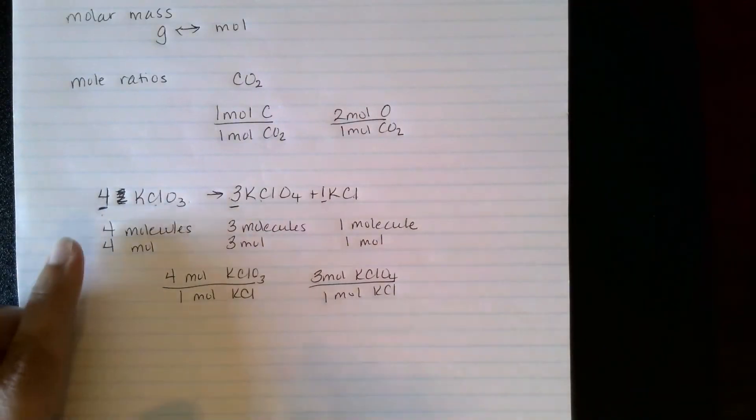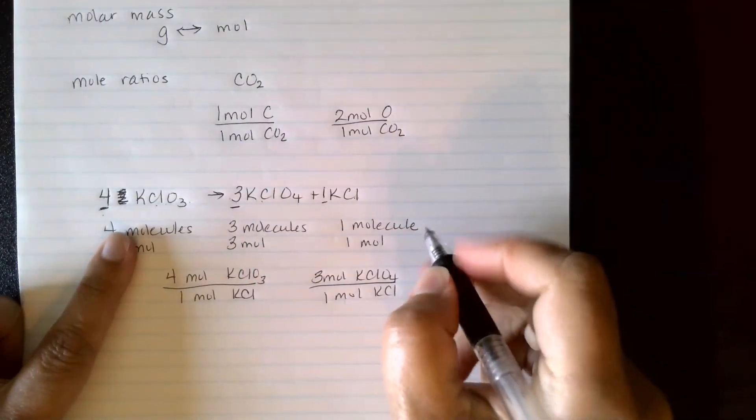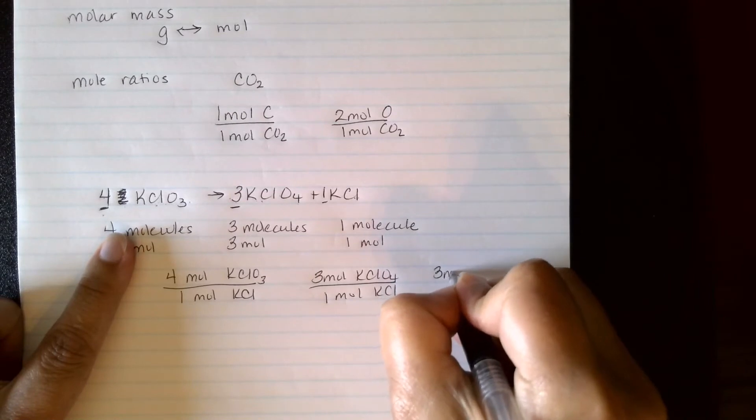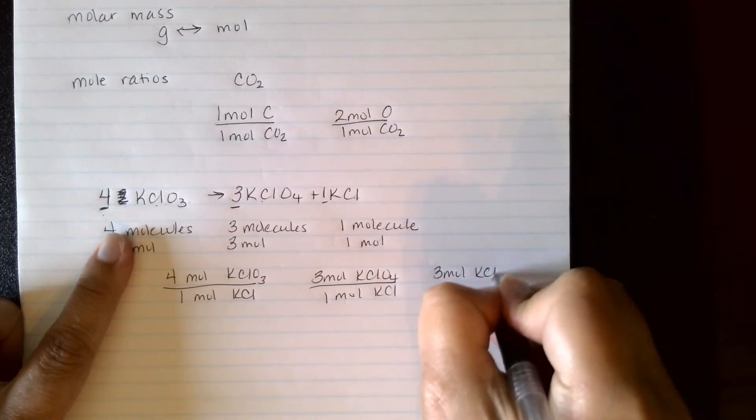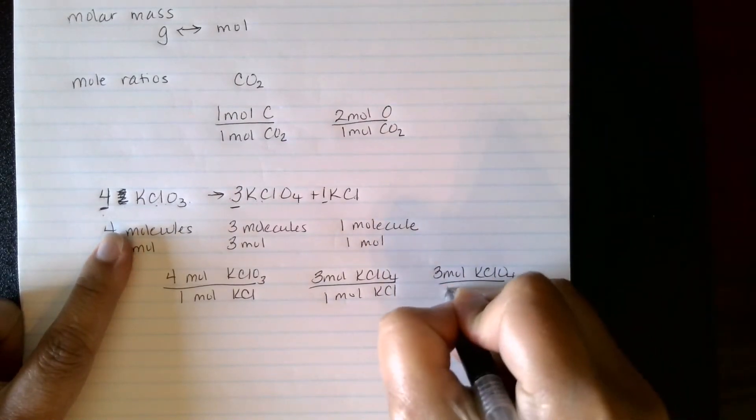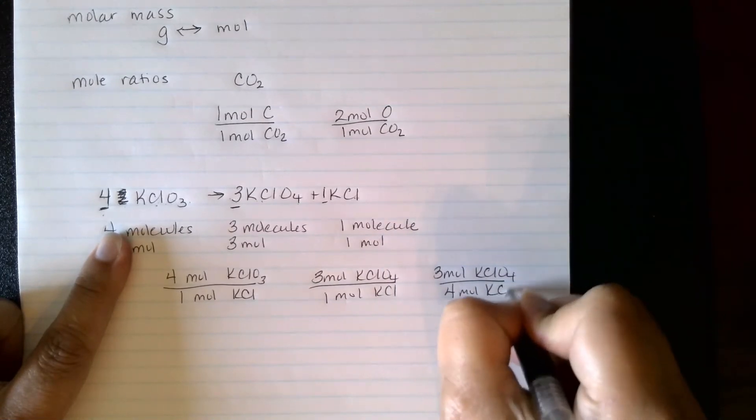I could also look at these two and say there's three moles of KClO4 for every four moles of KClO3.